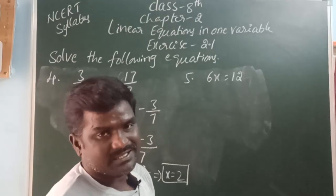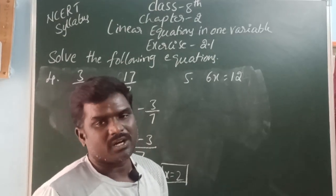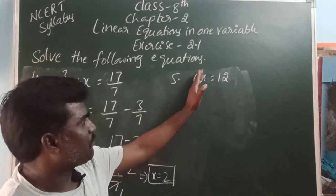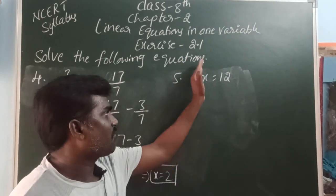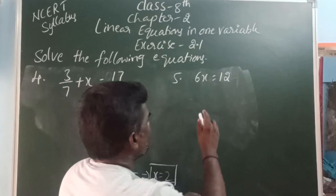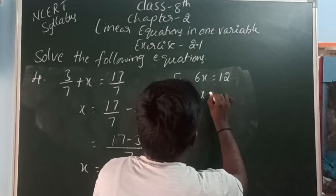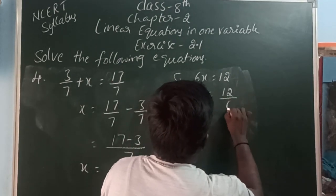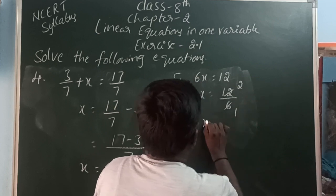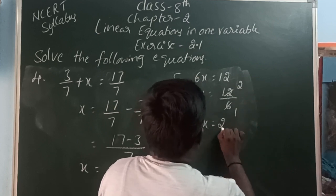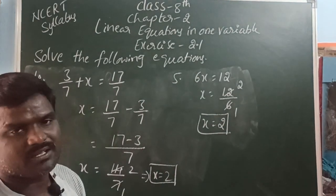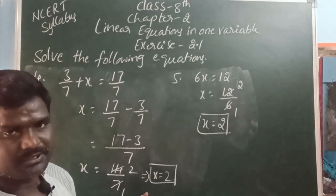6x is equal to 12. 6x means 6 into x. Here, 6 is the multiplied constant. This multiple constant is moving to the right side and it becomes divided. So x is equal to 12 by 6. Simplifying, x is equal to 2. This method is called with transform method.